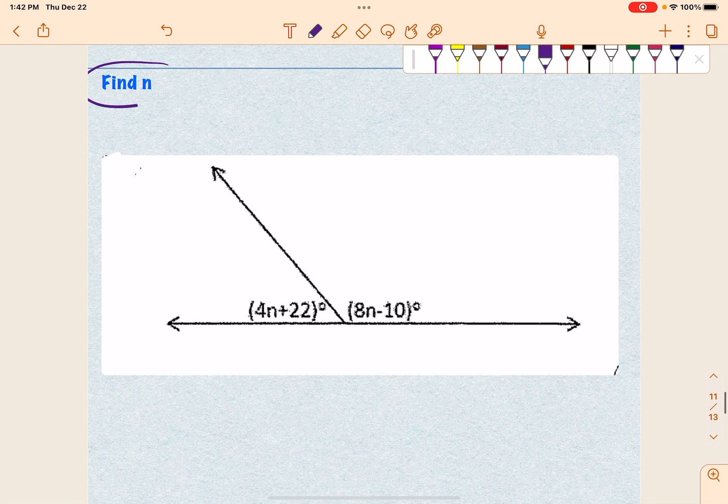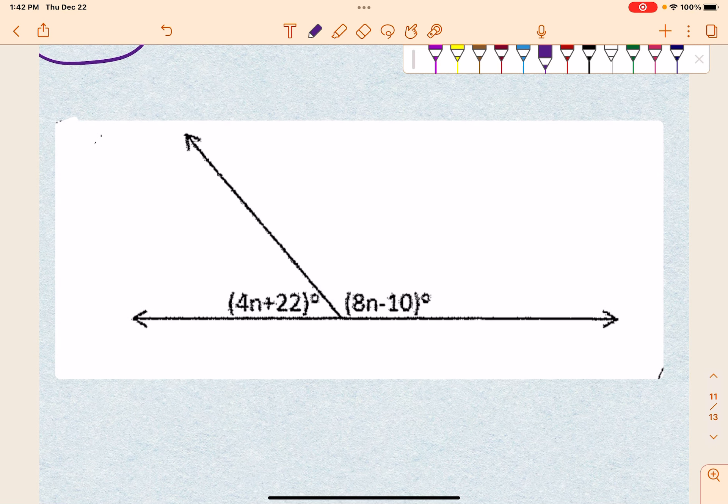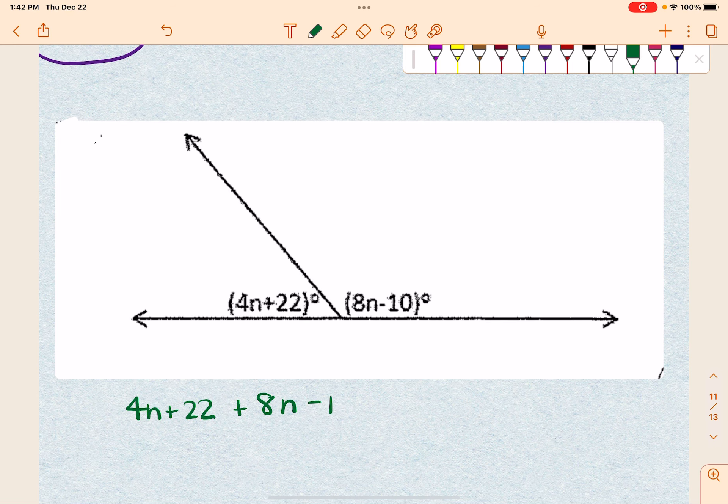This one, they just want us to find n. So if I look at this, I can see that these angles together make a straight line. So that means if I add this and this together, they're going to have to add up to 180 degrees, because that's a straight line.